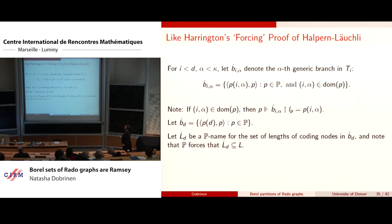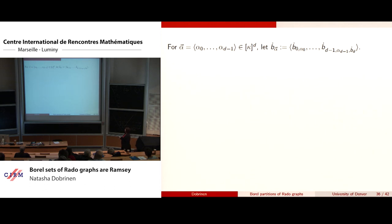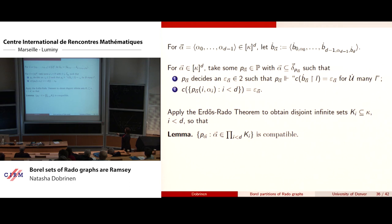Slightly differently from the Harrington proof, we let L-dot-D be a P-name for the set of lengths of coding nodes in B-dot-D, since not every member of L is what we need. We then make an ultrafilter name on L-dot-D, and make a collection of P-Vec-alphas where it decides a color on many L-levels, given by one color. Then some Ramsey theory using the Erdős-Rado theorem obtains infinitely many infinite disjoint sets K_i so that the lemma holds.